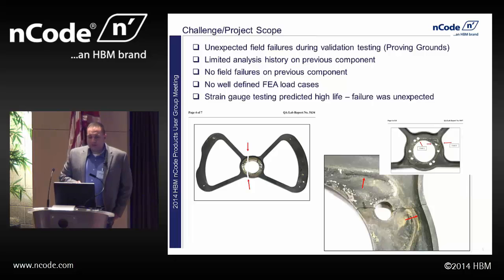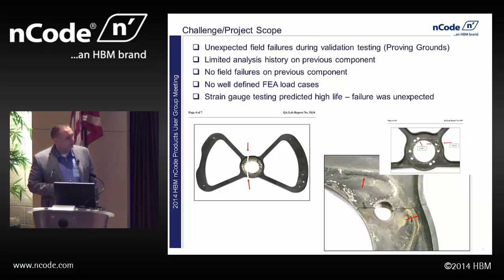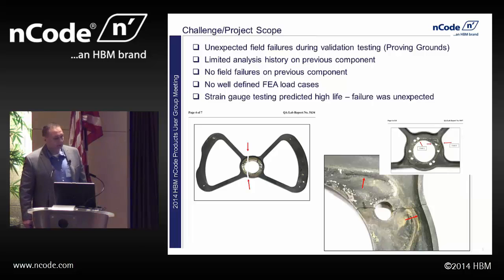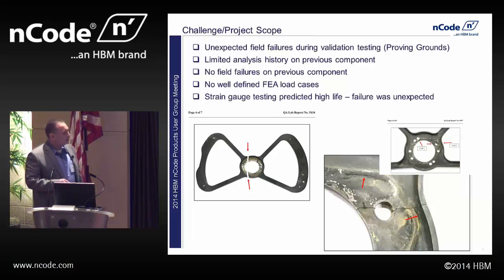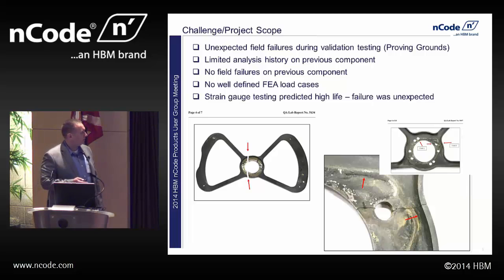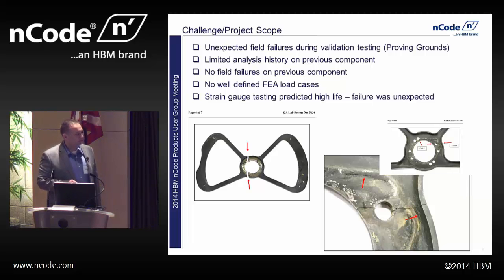The interesting thing about this project is that after the initial FEA, the component looked fine. We sent it to our proving ground and then we started seeing some unexpected failures. We had a limited analysis history on the previous component, no field failures or warranty data, no well-defined FEA load cases, and when we did do a strain gauge prediction, the strain gauge testing appeared to highlight issues. In summary, this failure was unexpected.